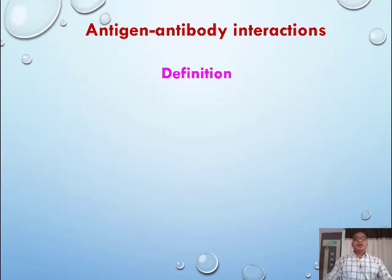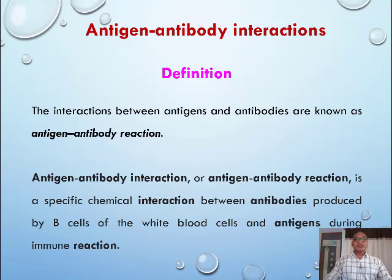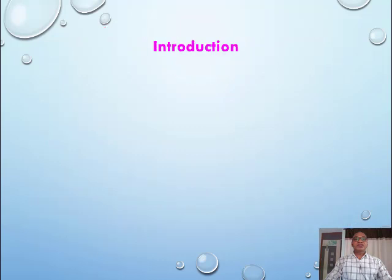Antigen-antibody interactions — definition. The interaction between antigens and antibodies is called the antigen-antibody reaction. Antigen-antibody reaction or antigen-antibody interaction is a specific chemical interaction between antibodies produced by B cells of WBC and antigens during the immune reaction.